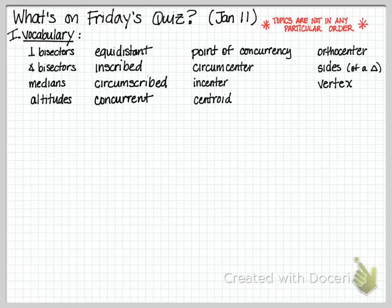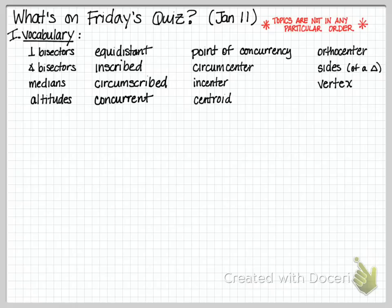The first topic I want to talk about is vocabulary. These are some of the terms that we have talked about so far in this unit: angle bisectors, perpendicular bisectors, medians, altitudes, the term equidistant, to be inscribed, to be circumscribed.